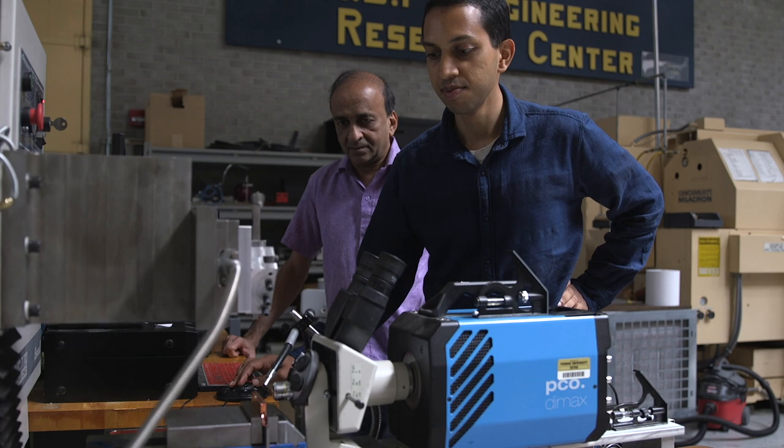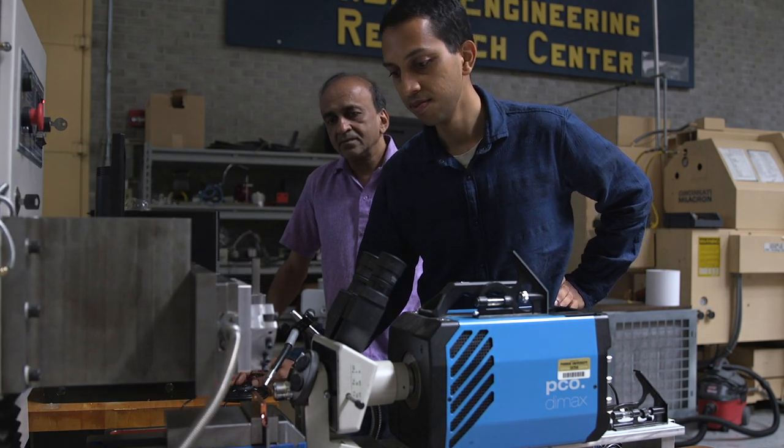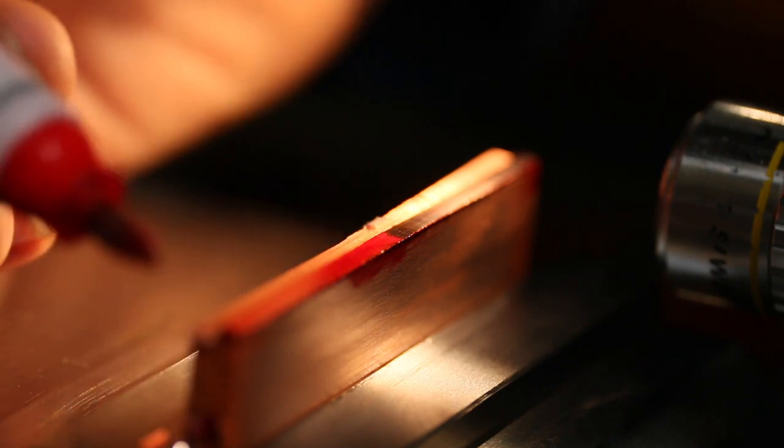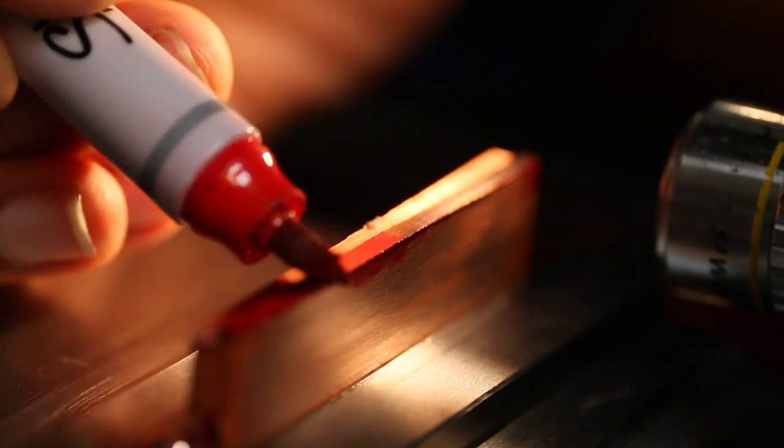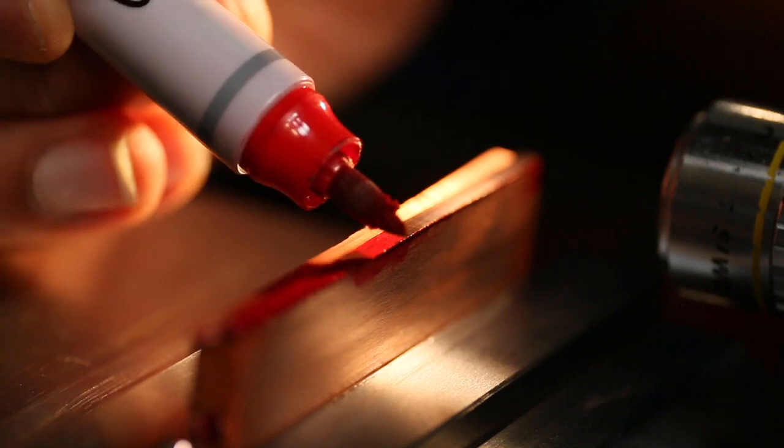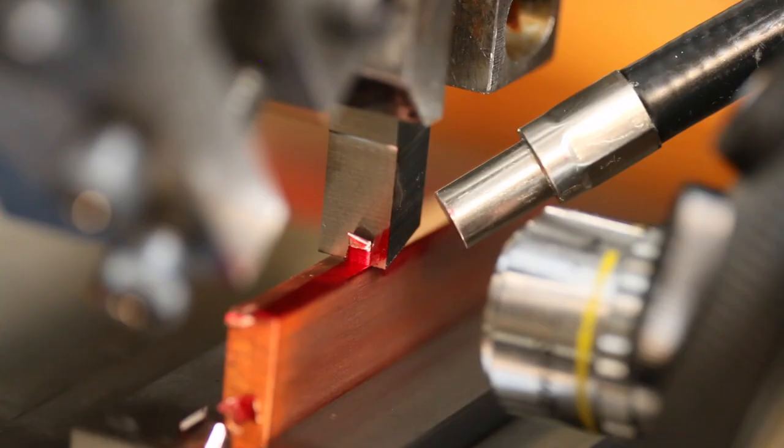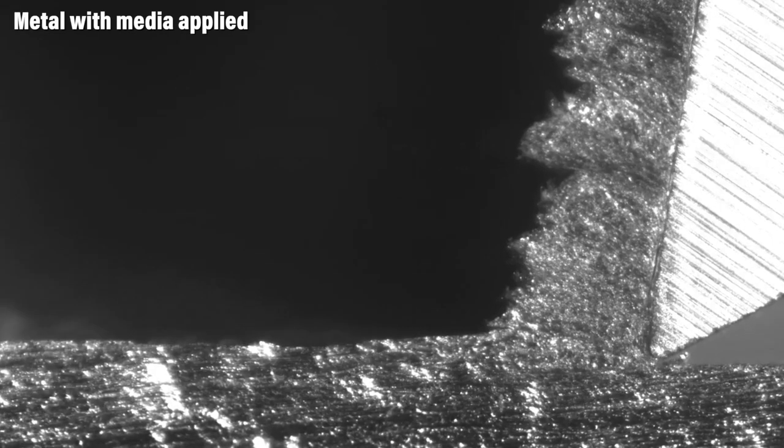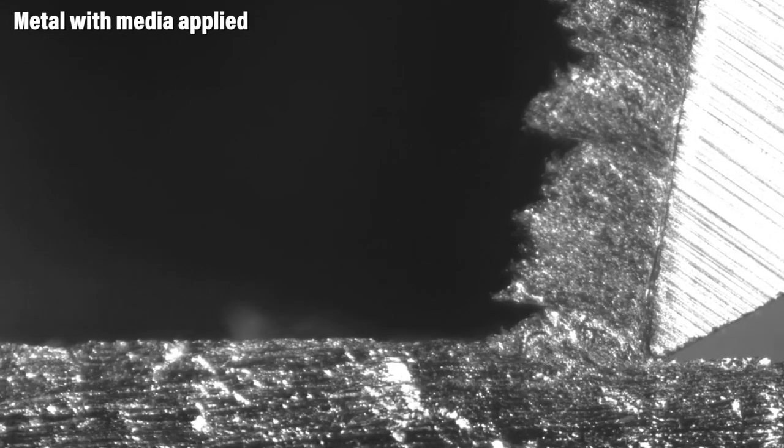A couple of years ago, when we started examining this problem, we found that if you applied some common media like Sharpie or metal marking inks or even glues to the initial surface of the metal that you're going to cut, the soft metals cut very nicely. The forces were low, the cut surface quality was very good.